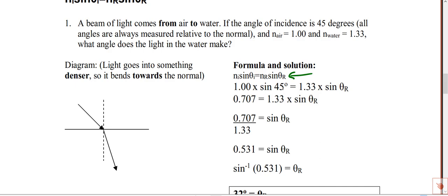So sine of 45, if you put that into your calculator, should be 0.707, and carry three digits please for your calculations until you're at the end. Your index is 1, and so 1 times anything is itself. Over on this side, 1.33 times sine theta r. If we want to get the 1.33 to come to the other side, then we need to divide both sides by 1.33. If we do that, then this is going to cancel out. 0.707 divided by 1.33 is going to give us a decimal, 0.531.